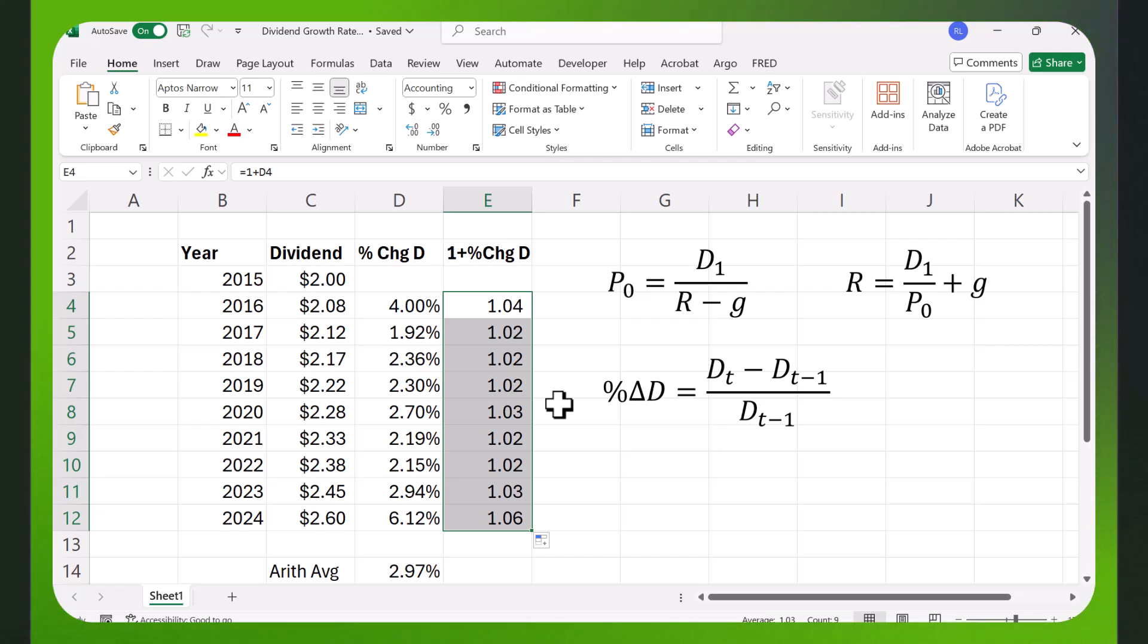I actually have a video that shows you how to calculate arithmetic and geometric averages, and I'll provide a link below. How you do that is you would multiply this times this, and then times this, and then times this. And then instead of dividing by 9, you're going to raise it to the 1/9th power, take the 9th root, and then subtract 1.